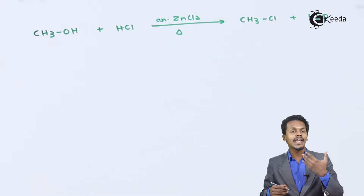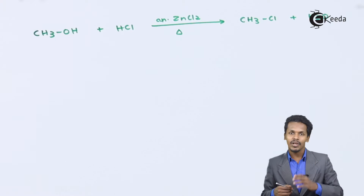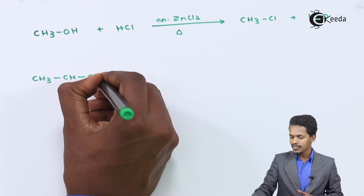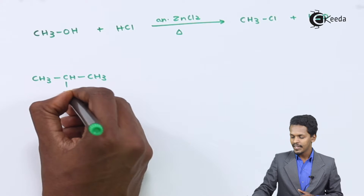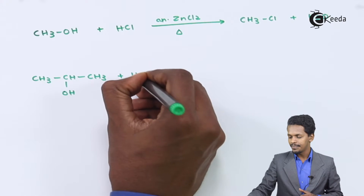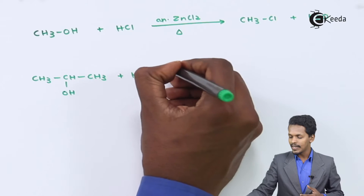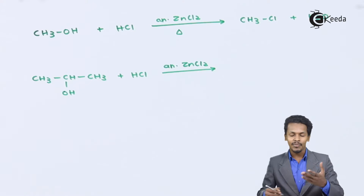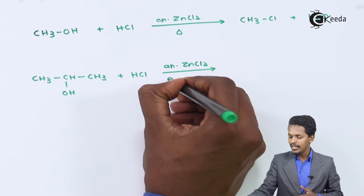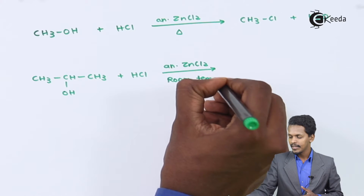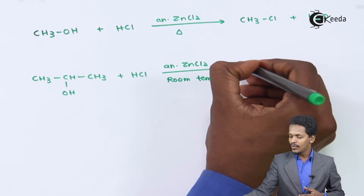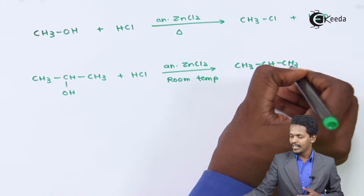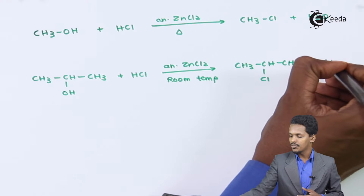What happens if we consider a secondary alcohol? For example, if we consider CH3CH(OH)CH3 and react it with HCl, we again use anhydrous ZnCl2, but we don't have to provide high temperature — this reaction is feasible at room temperature only. The product we get is CH3CHClCH3 along with H2O.